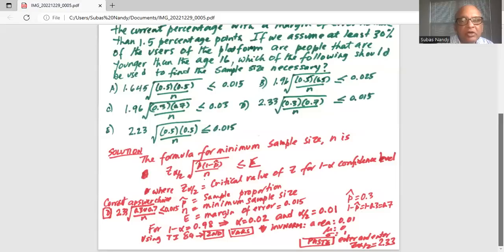So the correct answer choice is option D: 2.33 times square root of 0.3 times 0.7 divided by n, that should be less than or equal to margin of error, which is 0.015.